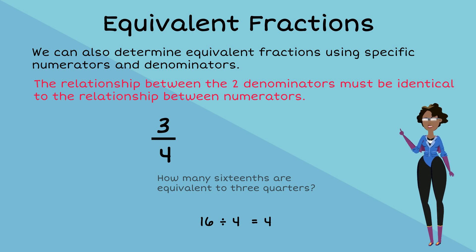This means the two numerators are related by the multiple of four. Hence, we multiply the numerator three by four and get a value of twelve. Three-quarters is equivalent to twelve-sixteenths.